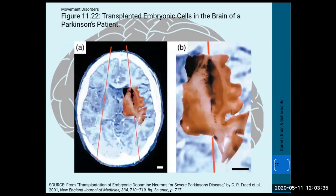The most promising treatment remains stem cell therapy. Transplanted embryonic cells in the brain of a Parkinson's patient could become new dopamine neurons. If the Lewy bodies are no longer actively destroying them, these new neurons could restore dopamine production — actually patching the hole in the boat rather than just bailing water. As long as those neurons aren't later destroyed, this could be a potential cure for Parkinson's, and scientists are actively working on it.